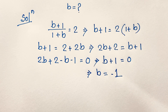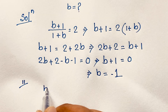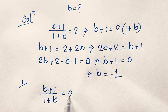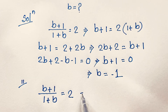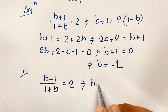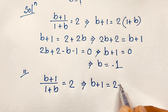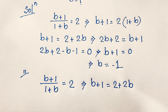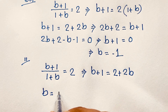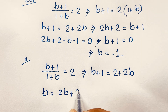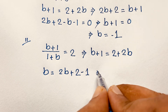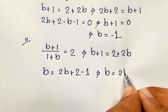Now let me solve this question by another method. Our question is (b + 1) / (1 + b) = 2. We have b + 1 = 2(1 + b) = 2 + 2b. Taking b to one side, b = 2b + 1. Then I apply squaring to both sides.